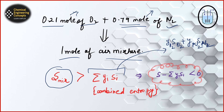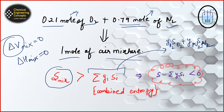Two properties do not change in an ideal gas mixture: volume and enthalpy. The volume change of mixing of ideal gases is zero, and the same is the case with enthalpy. However, the entropy change of mixing and the Gibbs free energy change of mixing are not zero — they either increase or decrease. Since the mixture entropy is greater than the combined entropy, that difference term will be less than zero.